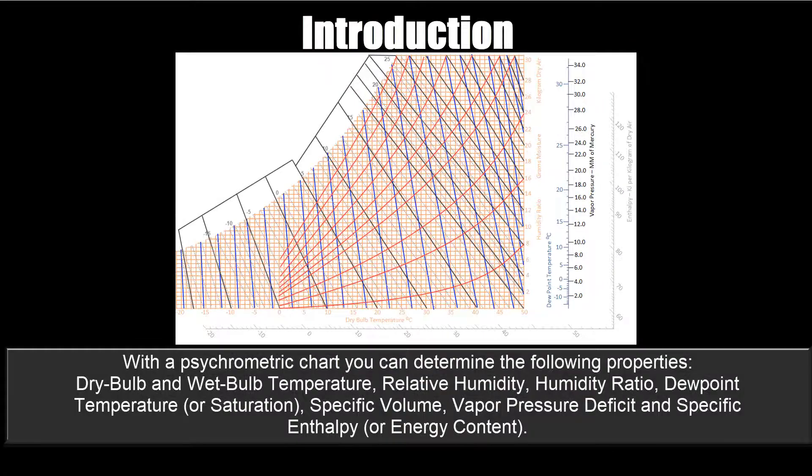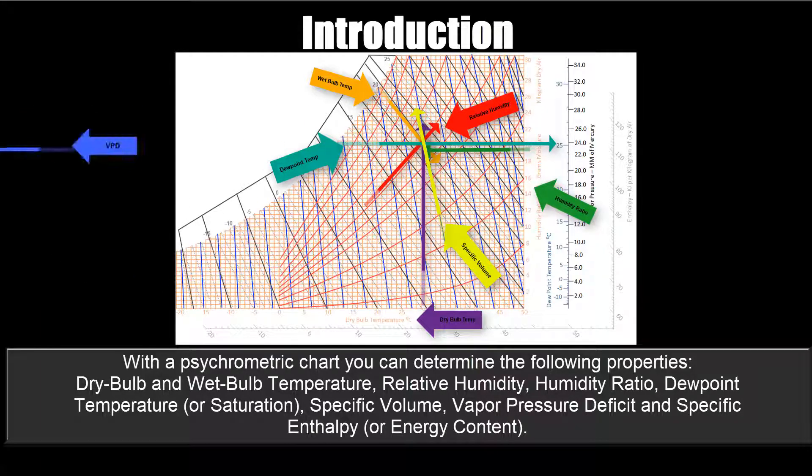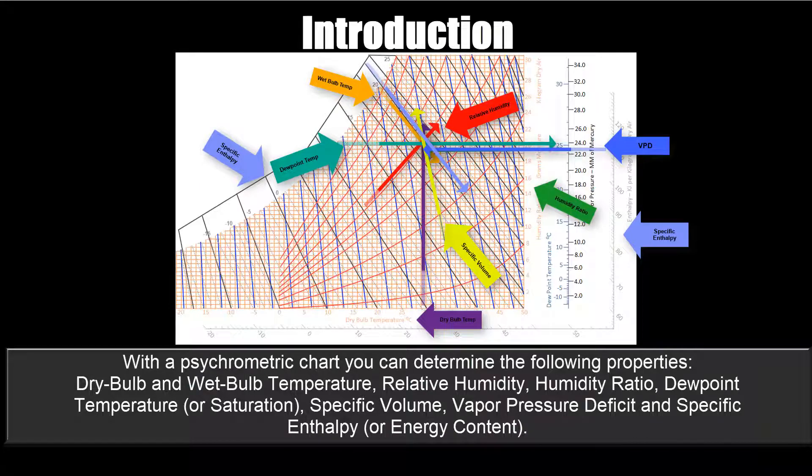With a psychrometric chart, you can determine the following properties: dry bulb temperature, wet bulb temperature, relative humidity, humidity ratio, dew point temperature or saturation, specific volume, vapor pressure deficit or VPD, and specific enthalpy or energy content.